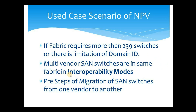The second use case scenario is more practical and is seen in some environments: multi-vendor SAN switches in the same fabric in interoperability mode. This means if you have a fabric consisting of Cisco switches but you also have some Brocade switches, and all those switches are connected to the same fabric, then NPV is the feature used for communication between those two different vendor switches, which must be in interoperability mode.